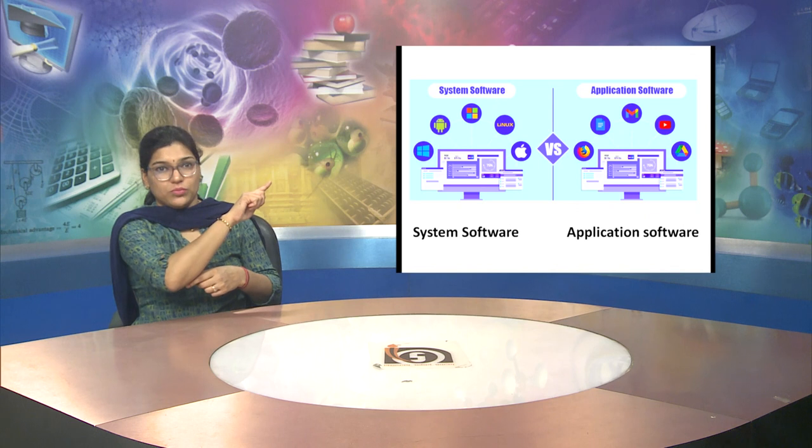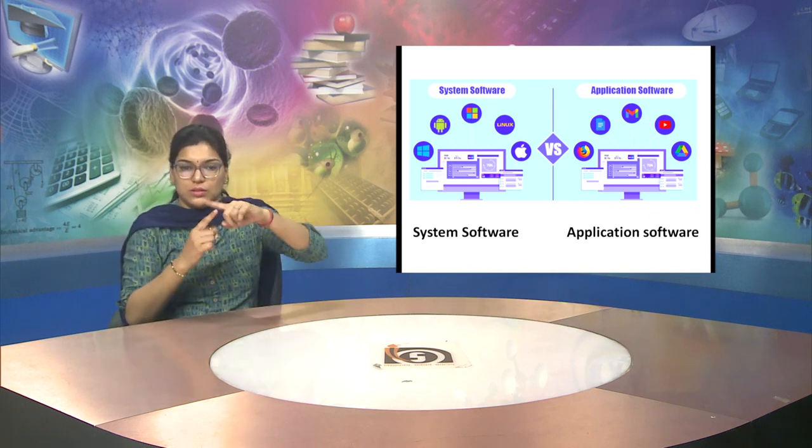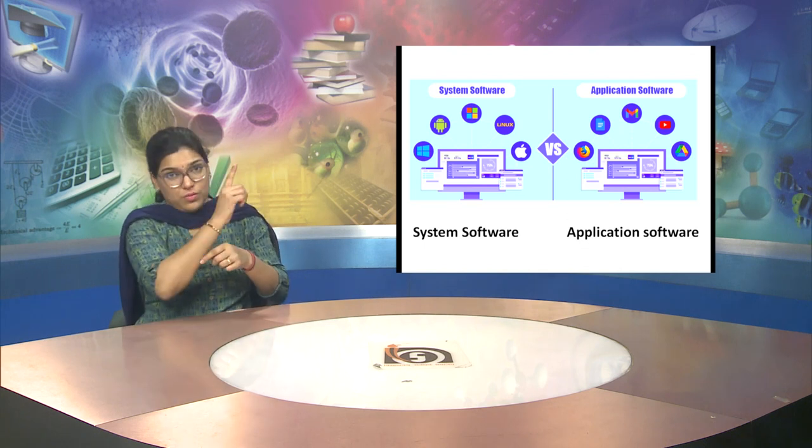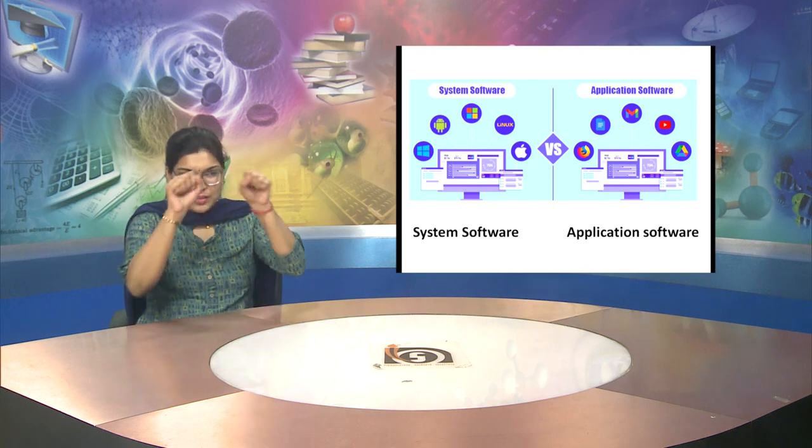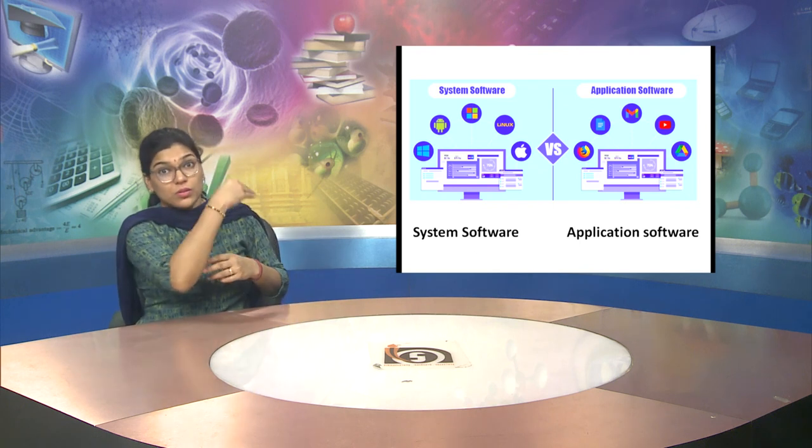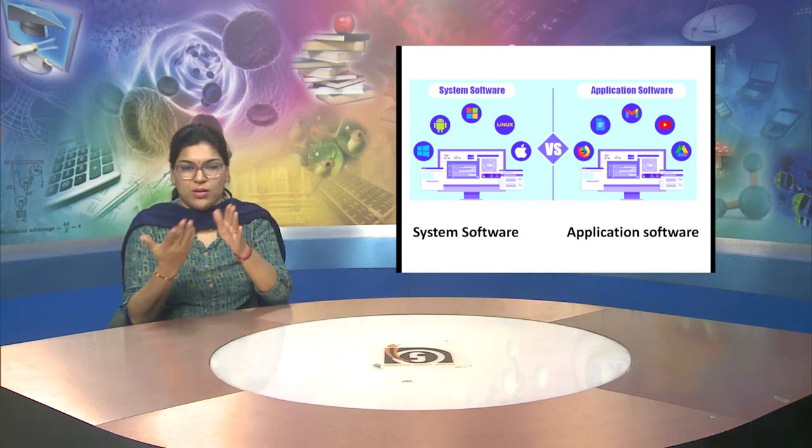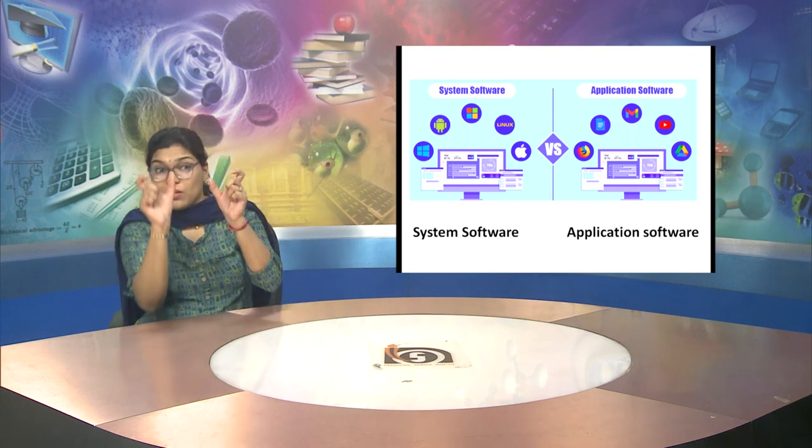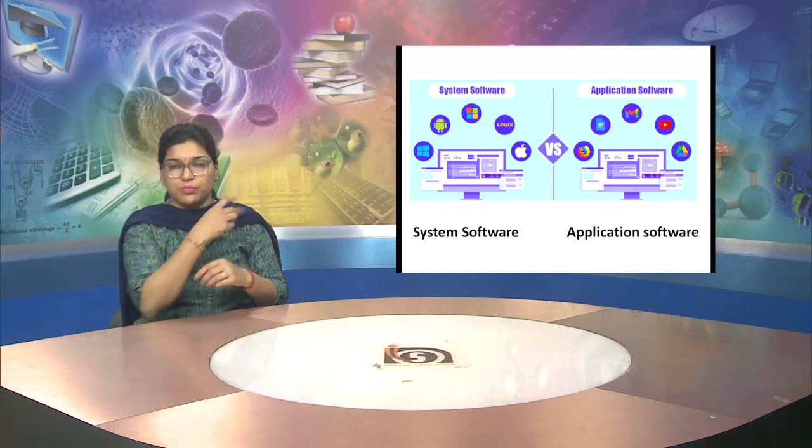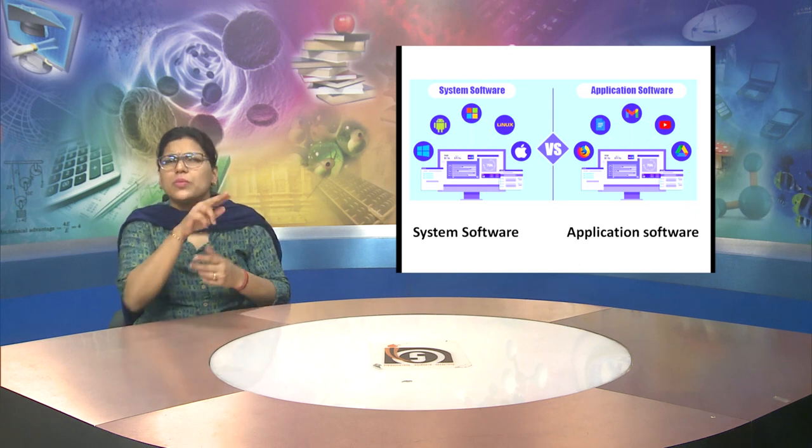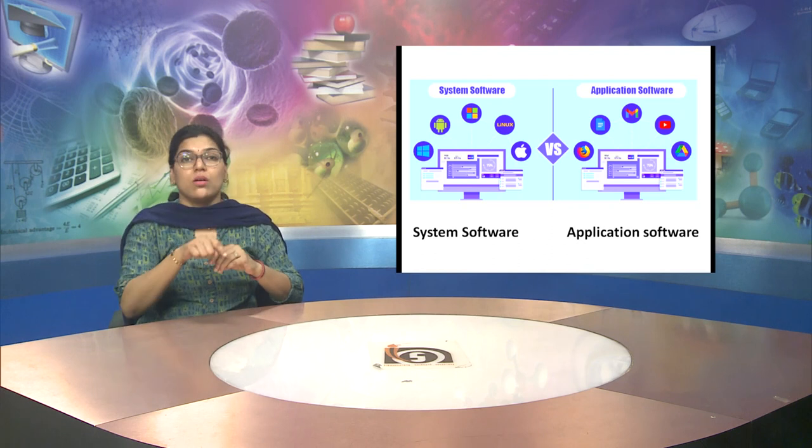Now these two words which you can see are different. The first one is system software. And the other word is application software. Both are software but both are different. Let me tell you the meaning of system software first.